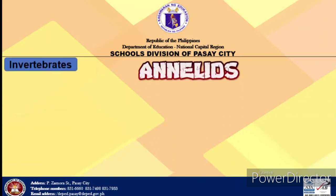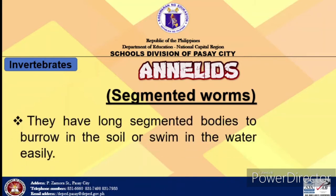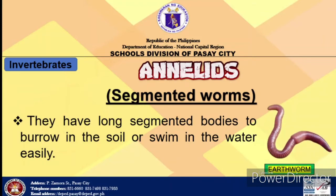How about annelids? Annelids are also called segmented worms. They have long, segmented bodies to burrow in the soil or swim in the water easily. The first segment in an annelid's body contains the brain and sense organs, while the rearmost segment contains the anus. While annelids have digestive, circulatory, and nervous systems, they do not have a respiratory system — they have to breathe through their skin. That is why their skin needs to be moist all the time. Example is earthworm.